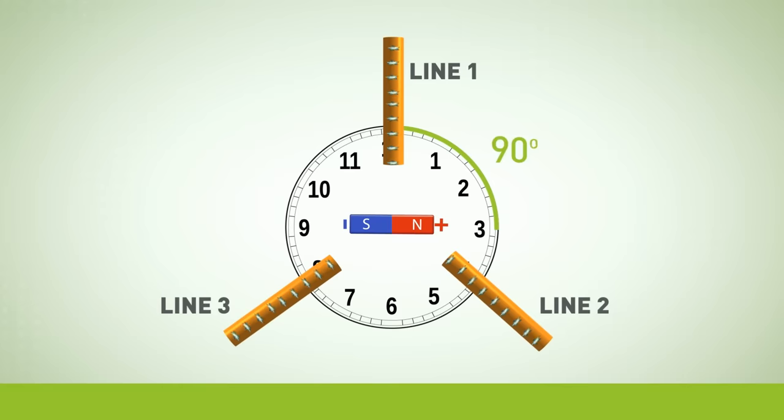Going from 12 to 3 is 90 degrees. Going from 12 to 4 is 120 degrees. When generating three-phase power, the copper lines are located 120 degrees apart.